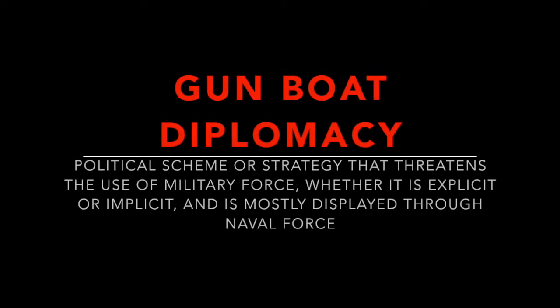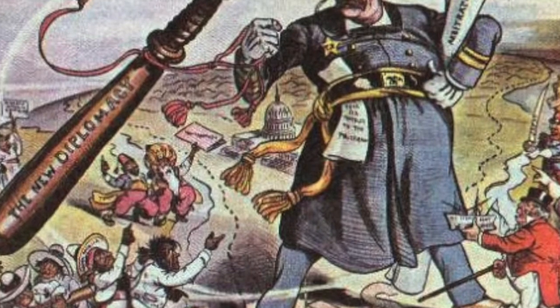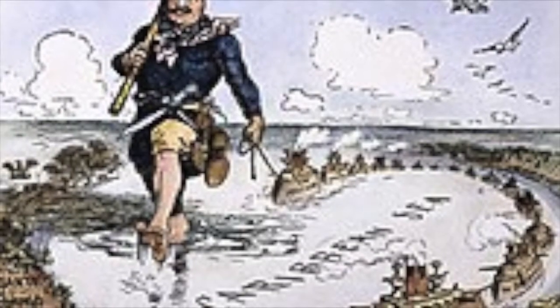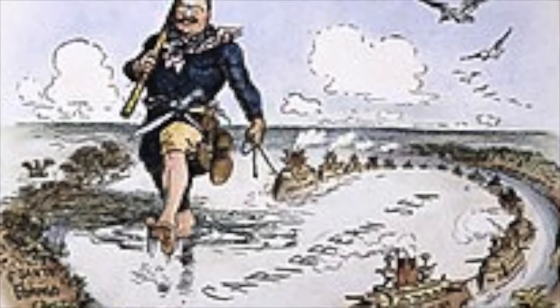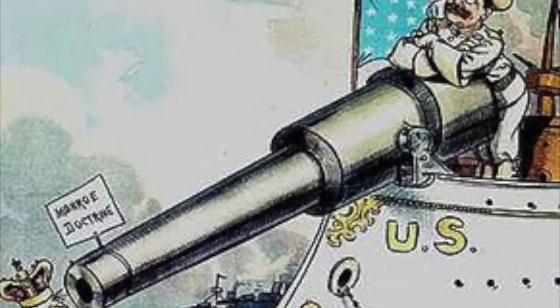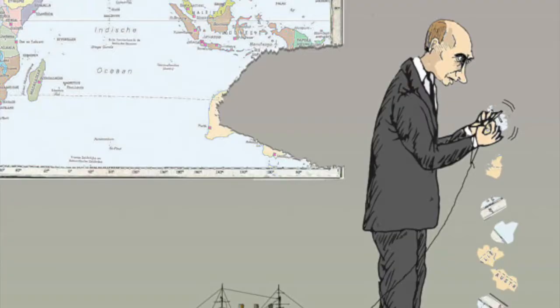Gunboat diplomacy refers to a political scheme or strategy that threatens the use of military force, whether implicit or explicit, and is mostly displayed through naval force. The term comes from 19th century imperialism, where the western powers — Europe and the U.S. — would intimidate other less powerful states into granting concessions through a demonstration of their superior military capabilities depicted by their naval assets.